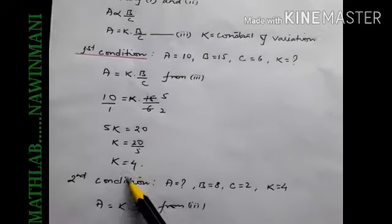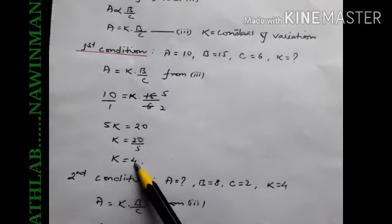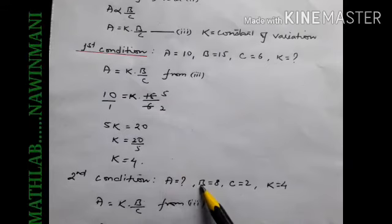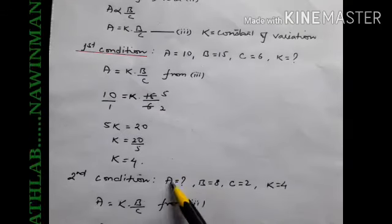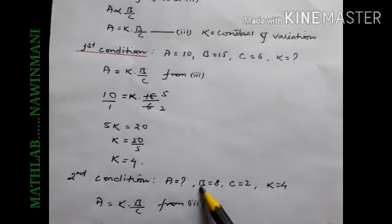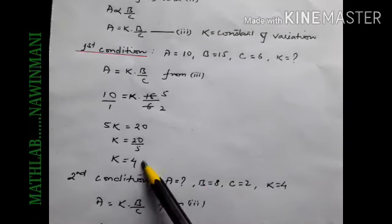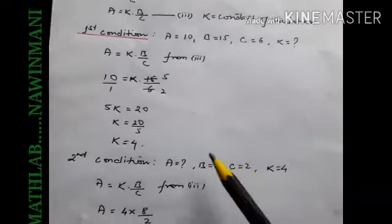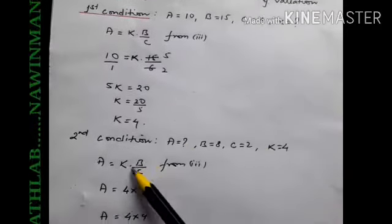Then what I told you: if A is asked, B and C will be given. If B is asked, A and C will be given. If C is asked, A and B will be given. Here B and C are given constants, value K=4 we will use, and we will find A.